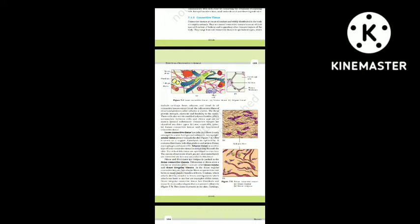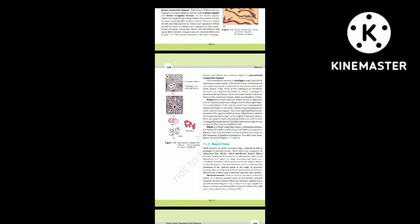Dense irregular connective tissue has fibroblasts and many fibers, mostly collagen, oriented differently. This tissue is present in the skin. Cartilage, bone and blood are various types of specialized connective tissues. The intercellular material of cartilage is solid and pliable and resists compression. Cells of this tissue, called chondrocytes, are enclosed in small cavities within the matrix secreted by them. Most cartilages in vertebrate embryos are replaced by bones in adults.